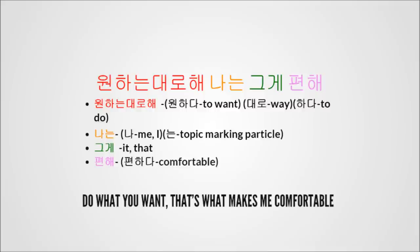The next sentence is 원하는 대로 해, 나는 그게 편해. That's four different words. The first, the red one, is 원하는 대로 해. This is a little bit complicated. The base is the verb 원하다, which means 'to want.' And 대로 means 'way.' So 원하는 대로 means 'how you want' or 'like you want.' Then 해 comes from the verb 하다, meaning 'to do,' and when conjugated this way it's a command — 'do it.' So 원하는 대로 해 means 'do what you want.'